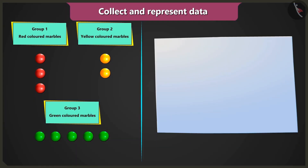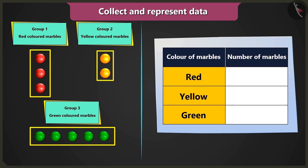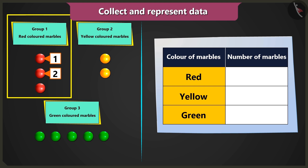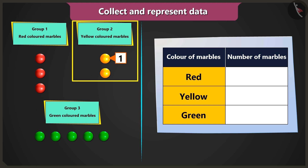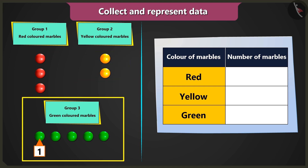Well done. Now create a table like this. Now you have to write the names of the colors — red, yellow, and green — in the column 'color of marbles'. What do we have to do next? Now we have to count the number of marbles in each group. There are one, two, and three red marbles in the first group. One and two — two yellow marbles in the second group.